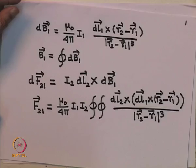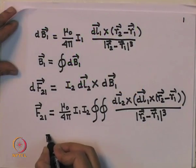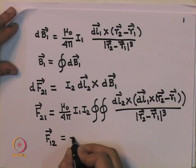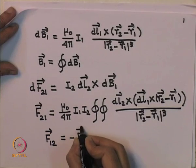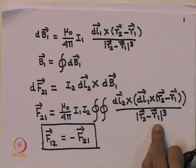We know that if circuit 1 exerts a force on circuit 2, then circuit 2 — which also carries a current and is therefore a source of magnetic field B₂ — will exert a force on circuit 1. According to Newton's third law, the action-reaction principle says the force F₁₂ (force on circuit 1 due to circuit 2) must be equal and opposite to F₂₁. This is not immediately clear from the expression, but we need to do a bit of algebra to prove it.